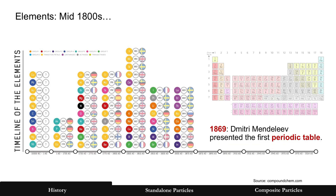By the mid-1800s, more elements were discovered and there was a sequence to this. Dmitri Mendeleev put them into the first periodic table. You can see the current version today completely filled out. Mendeleev didn't know all these elements at the time, but now they could be predicted — the elements that had not yet been discovered.